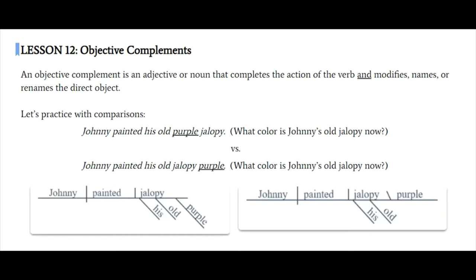An objective complement can be an adjective or a noun that completes the verb, it finishes the meaning of the verb, and it also modifies the direct object in some way. So if there is no direct object, there will be no objective complement.